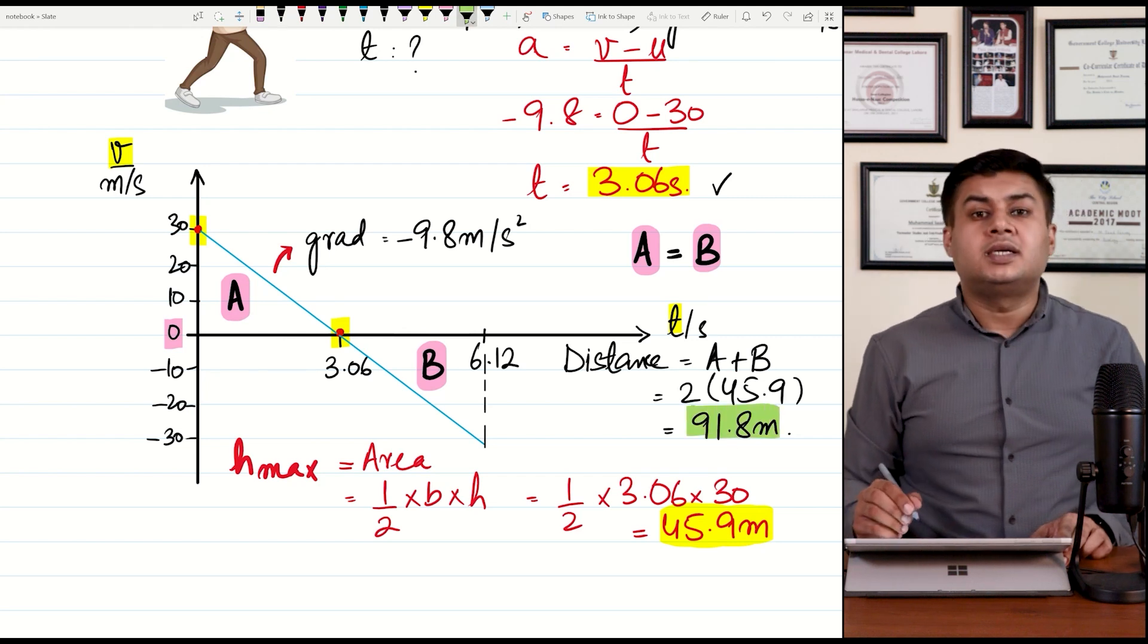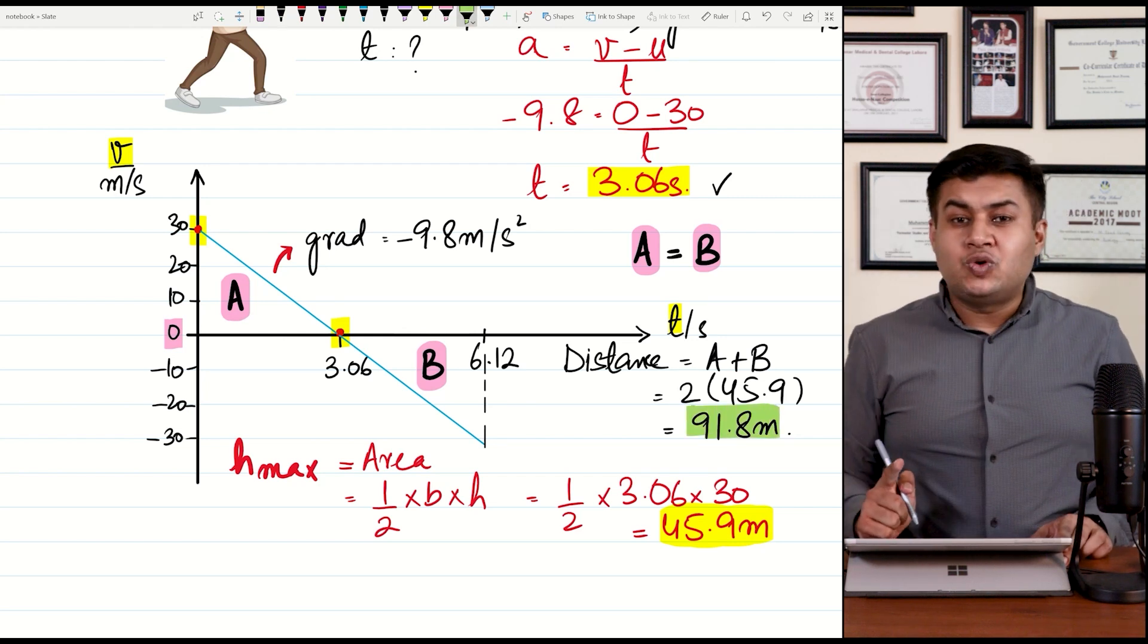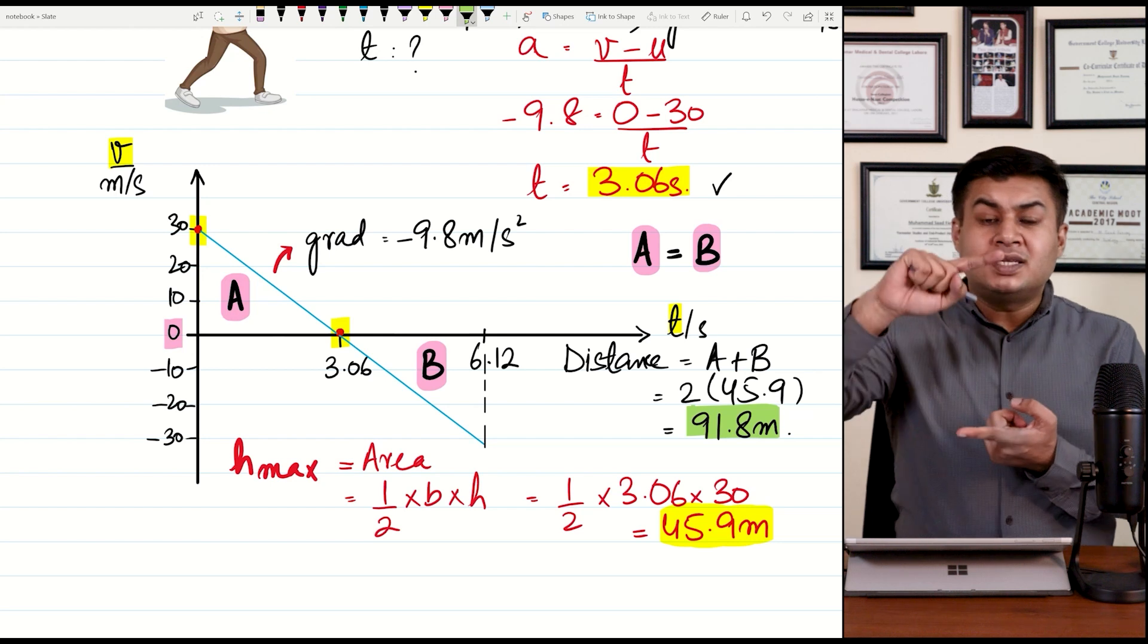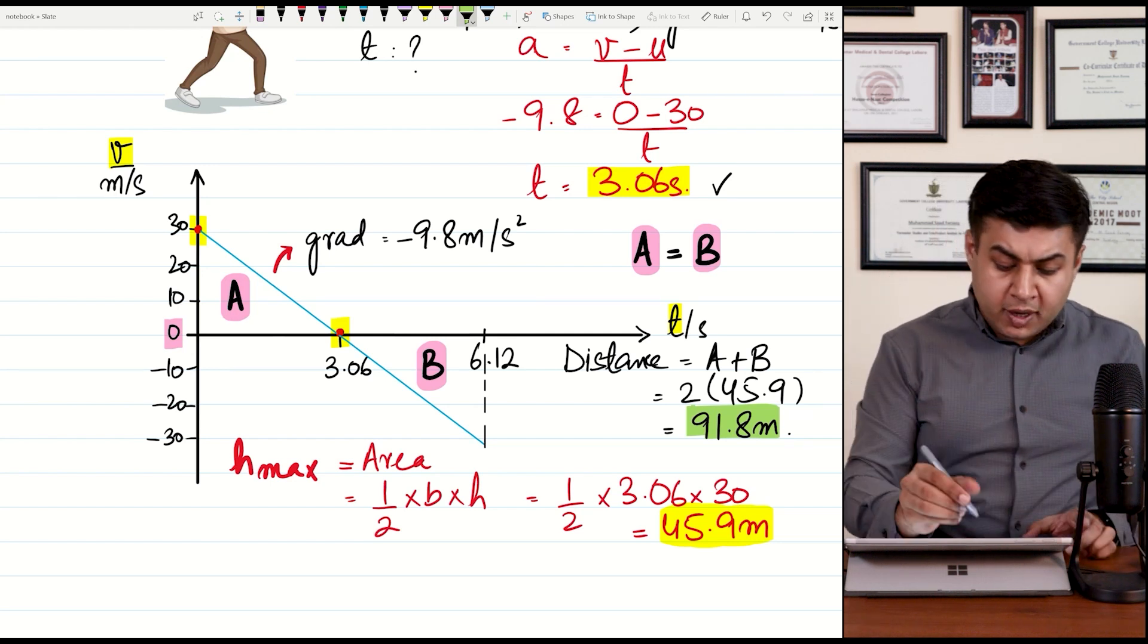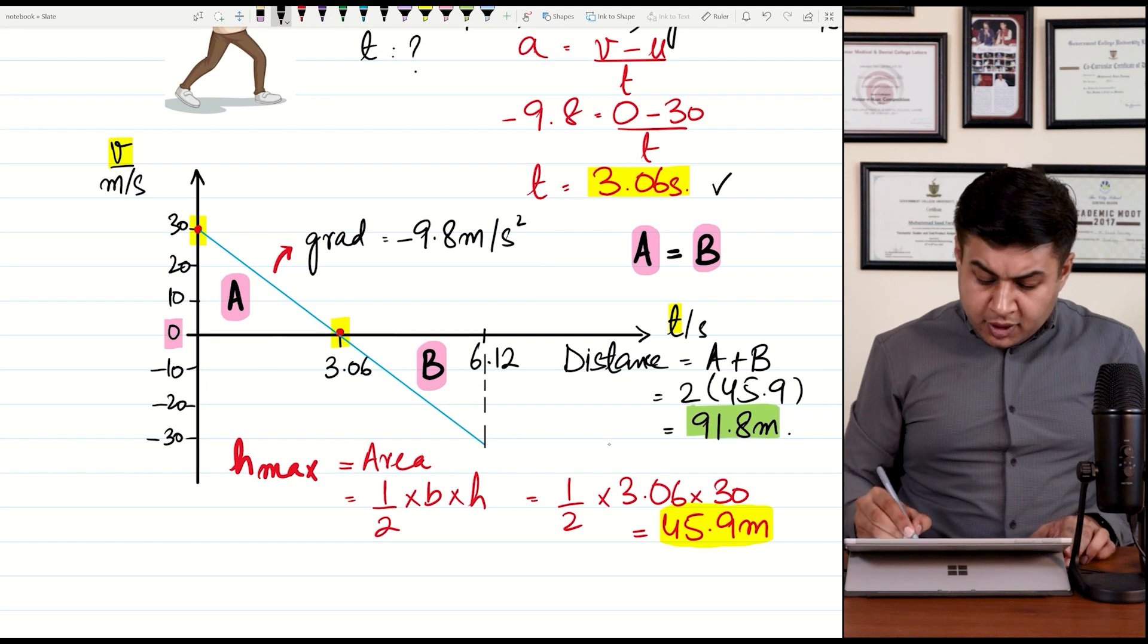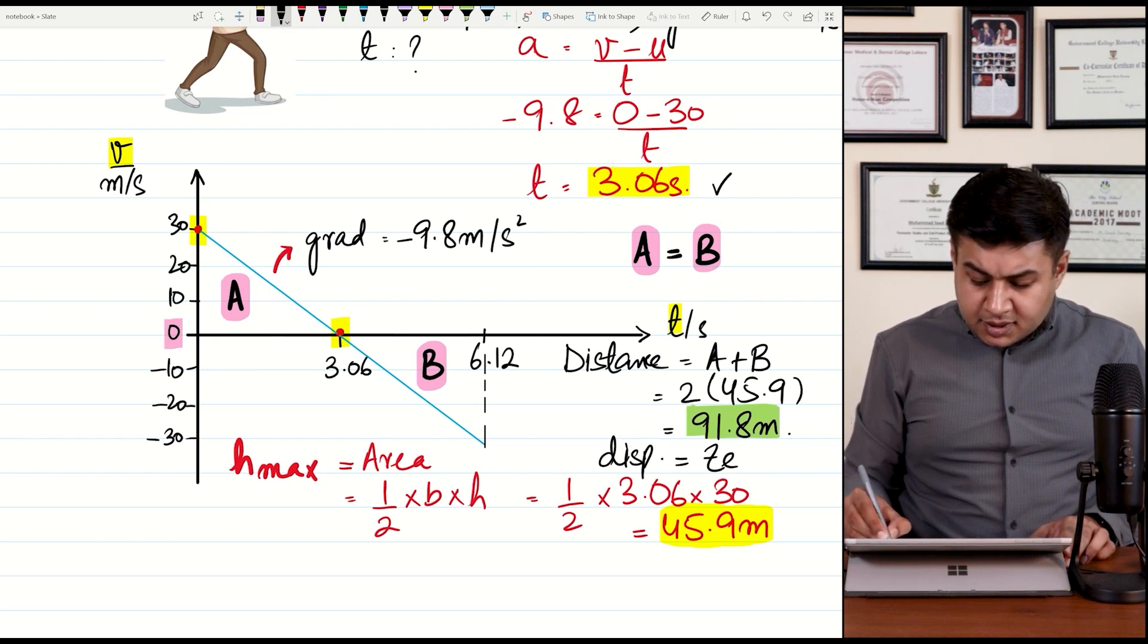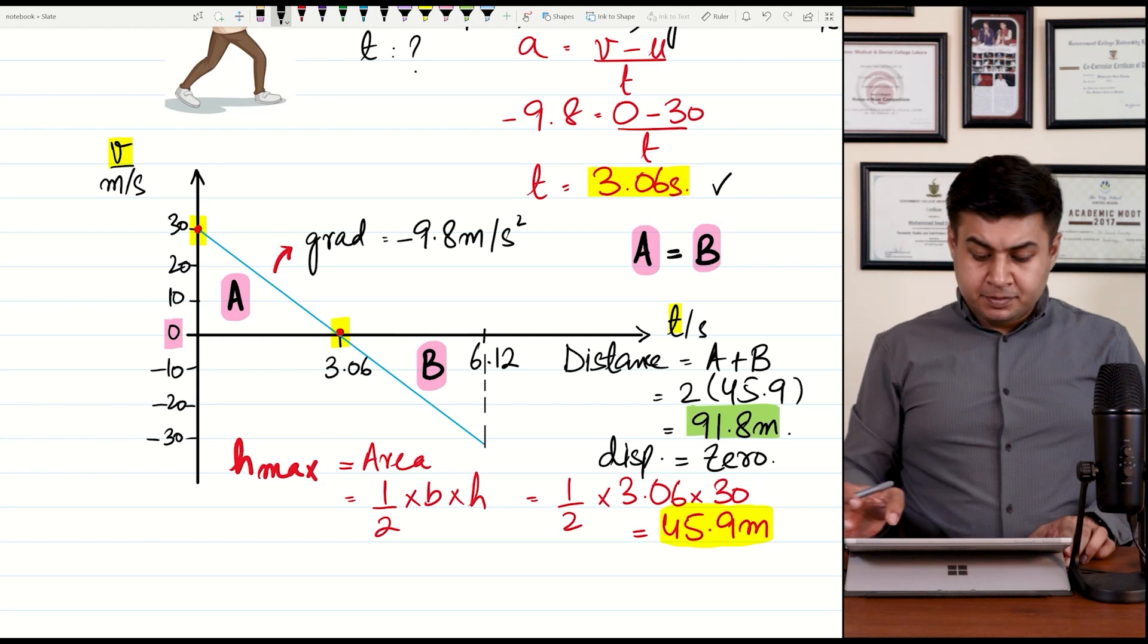What is the displacement? But your displacement zero ho ghi. Ball ne jitna upar distance travel kiya utna neeche travel kiya. Jo starting point tha, wohi ending point hai. Jab starting point or ending point same ho jate hai, to displacement zero ho jata hai. So its displacement is zero. Thik hai?